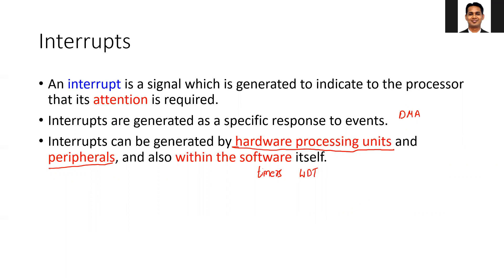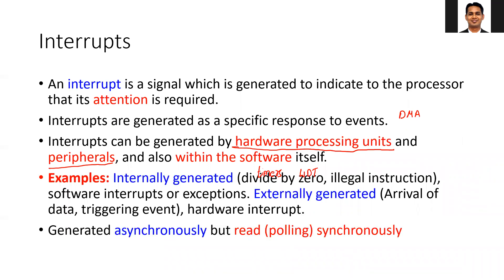In a multi-core system, one core can send an interrupt to another core. Interrupts can also be internally generated — for example, whenever you do a divide-by-zero, or when you are decoding an instruction that is illegal. There can also be externally generated interrupts, such as when data arrives on peripherals or an accelerator has completed its task.